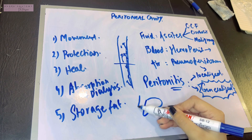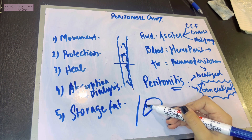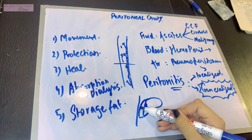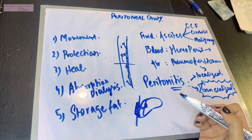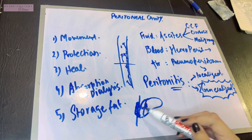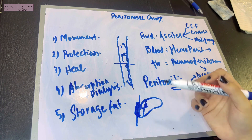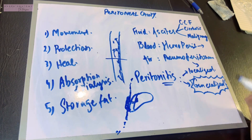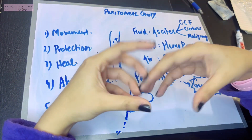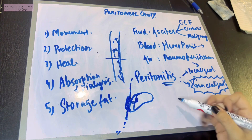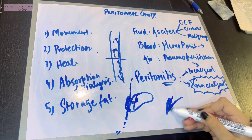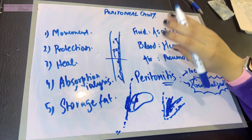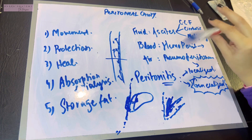Peritonitis occurs when, for example, the liver starts enlarging and comes in contact with the peritoneum, spreading infection — this is localized peritonitis. If not fixed via antibiotics and other measures, it may spread to the entire peritoneum within days, resulting in generalized peritonitis. A common cause is appendicitis: the appendix becomes inflamed, and if untreated, the pus and infection spread to the surrounding mesoappendix and peritoneum, eventually causing generalized peritonitis.